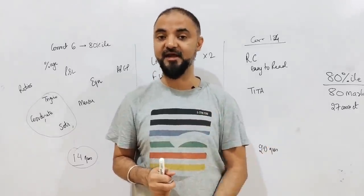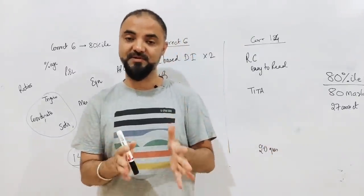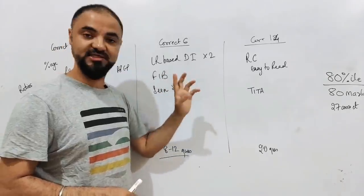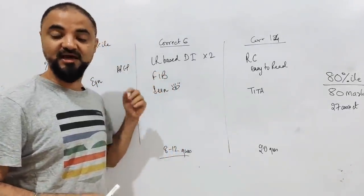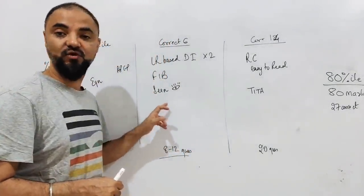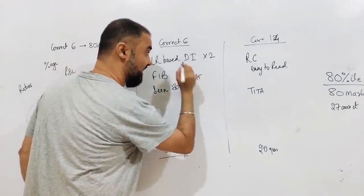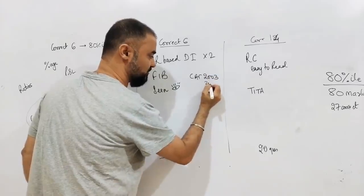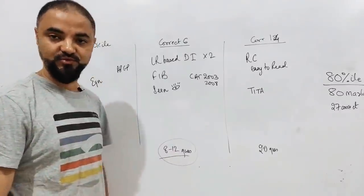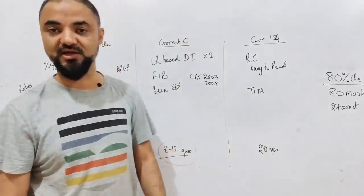For next year's CAT I am building a material book cutting out all the unnecessary content, keeping only the useful stuff. Logic-based DI: 2 sets are going to be in the CAT exam - you can pick those up. Fill in the blanks sets are the easiest you can get on exam day. Also solve last year's CAT papers for DI Logic - specifically CAT 2003 to 2008. If you do 6 correct out of 2 to 3 sets you are able to clear the cutoff.